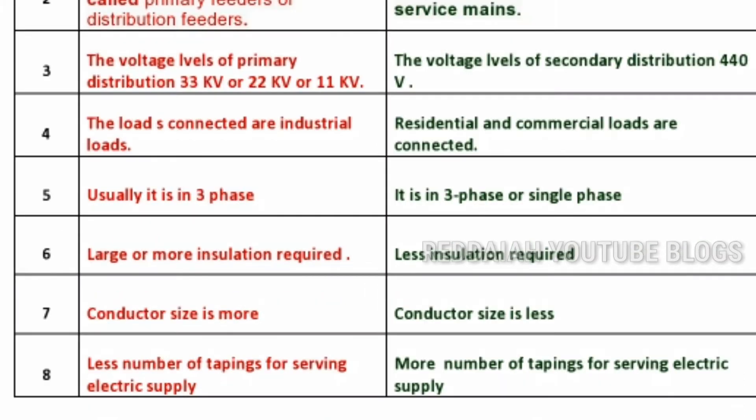For the primary distribution system, more insulation is required because of the high voltage — 33 kV. Pin type insulators are used for 11 kV or 33 kV. In the secondary distribution system, less insulation is required; for 440 volts the insulator size is also smaller.